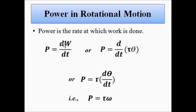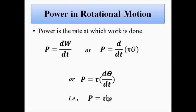Power is the rate at which work is done. In rotational motion, power is the time derivative of work (τθ). If torque is constant, this gives τ × dθ/dt. Since dθ/dt is angular velocity omega, power in rotational motion is P = τω — torque multiplied by angular velocity.